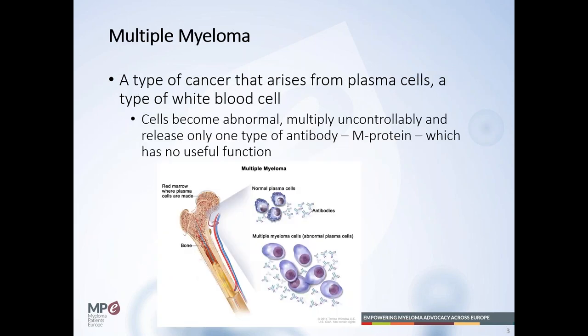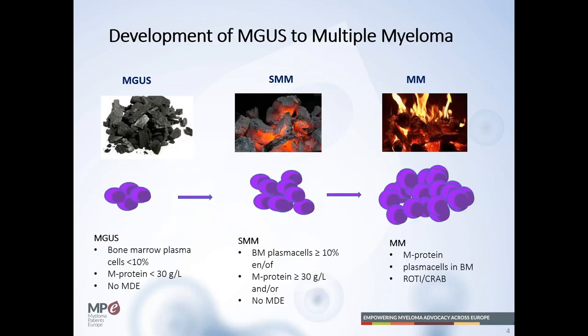To give a short introduction: multiple myeloma is a type of cancer that comes from the plasma cells. A clone of plasma cells arises and gives one type of M protein, such as IgA kappa or IgG lambda, which has no useful function and also gives the problem of lower other immunoglobulins, causing problems with infections. All kinds of multiple myeloma are preceded by a precursor state — MGUS, then smouldering myeloma, and then multiple myeloma.